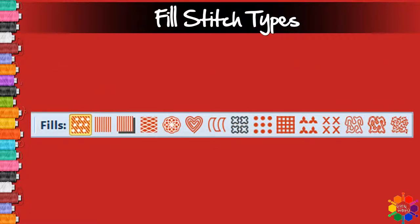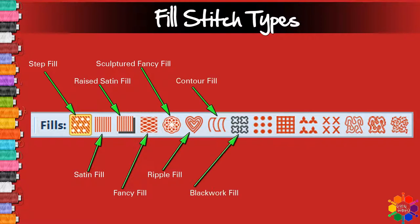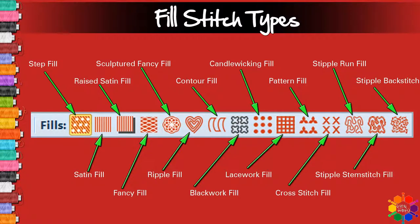Full stitch types: Step, Satin, Raised satin, Fancy, Sculptured fancy, Ripple, Contour, Blackwork full, Candlewicking full, Lacework full, Button full, Cross stitch full, Stipple run full, Stipple stem stitch full, Stipple, Backstitch.